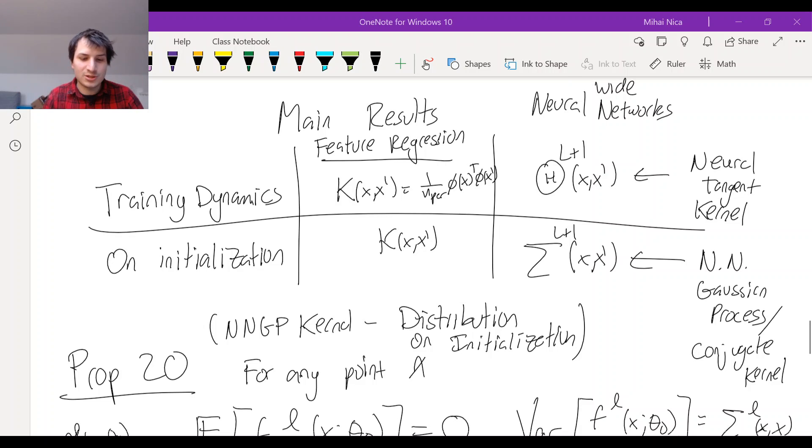Okay, so now I'm going to describe the main result for the training dynamics. In the feature regression model, that was just this kernel K, that was no problem. For a neural network, it turns out to be something slightly complicated called the neural tangent kernel, and it has a funny evolution rule. So that's what I'm going to write down now. I'm going to tell you what the neural tangent kernel is and what it says.